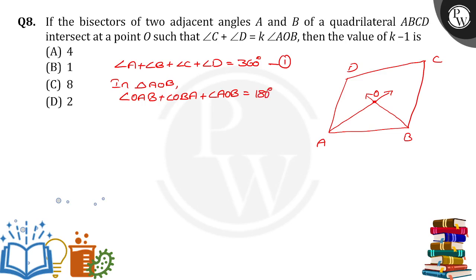Angle OAB is nothing but half of angle A. So I can write it as angle A by 2 plus angle B by 2 plus angle AOB equals 180 degrees.